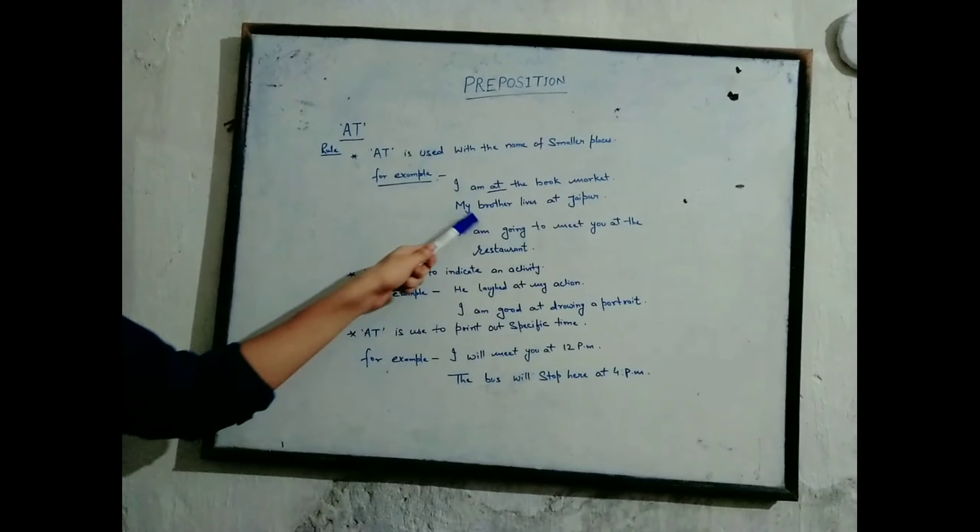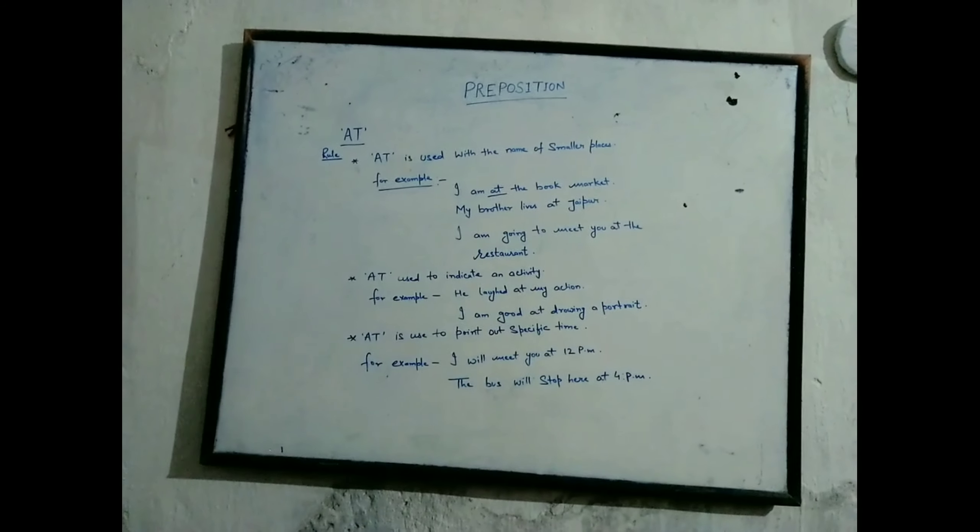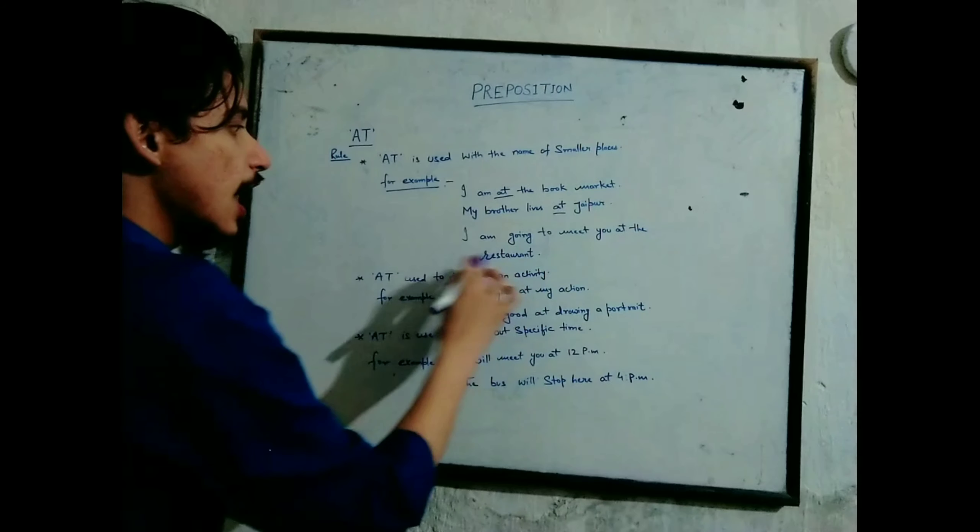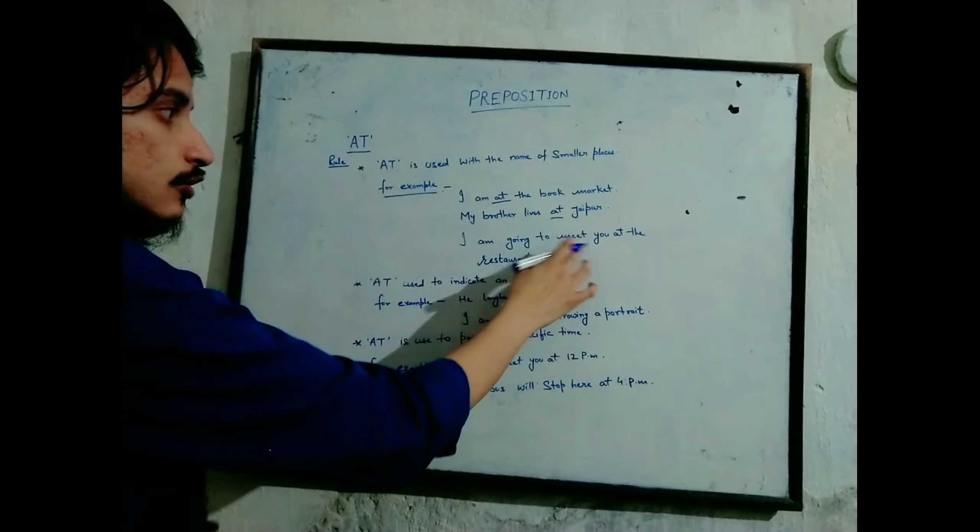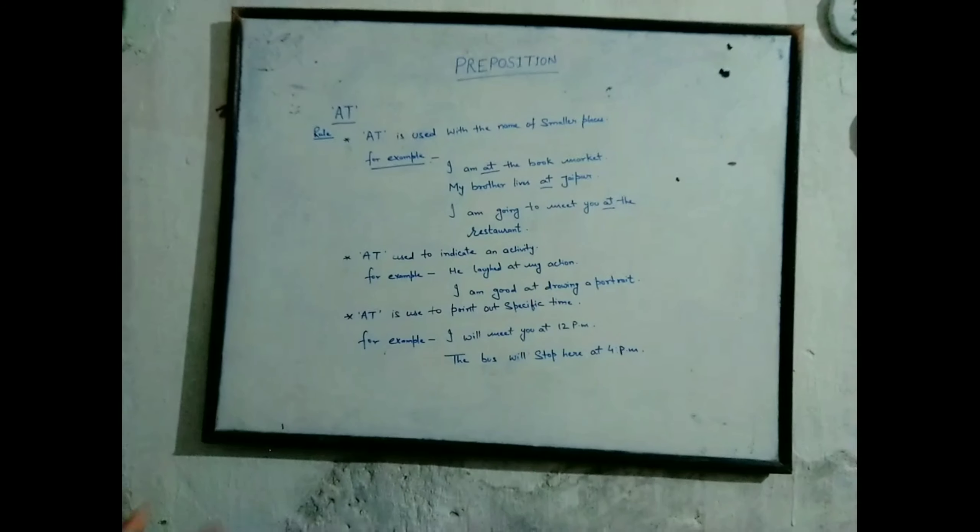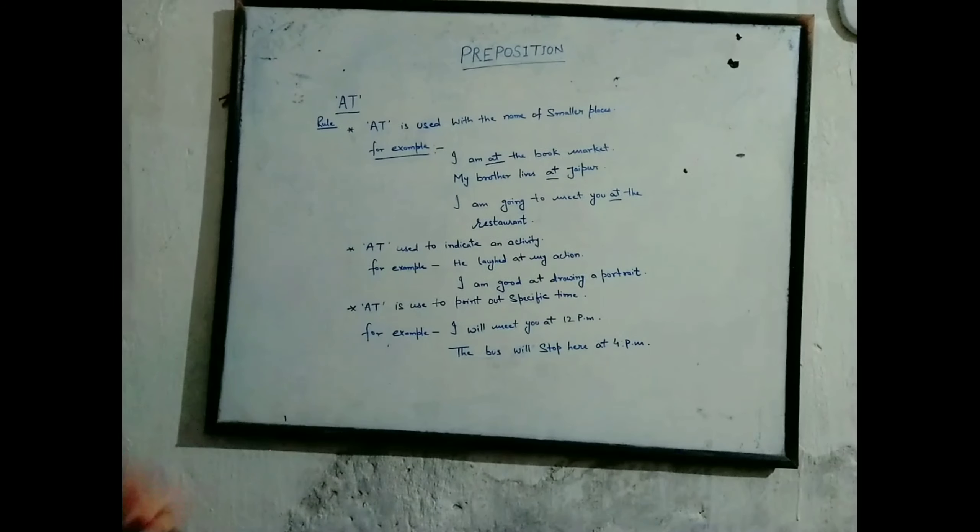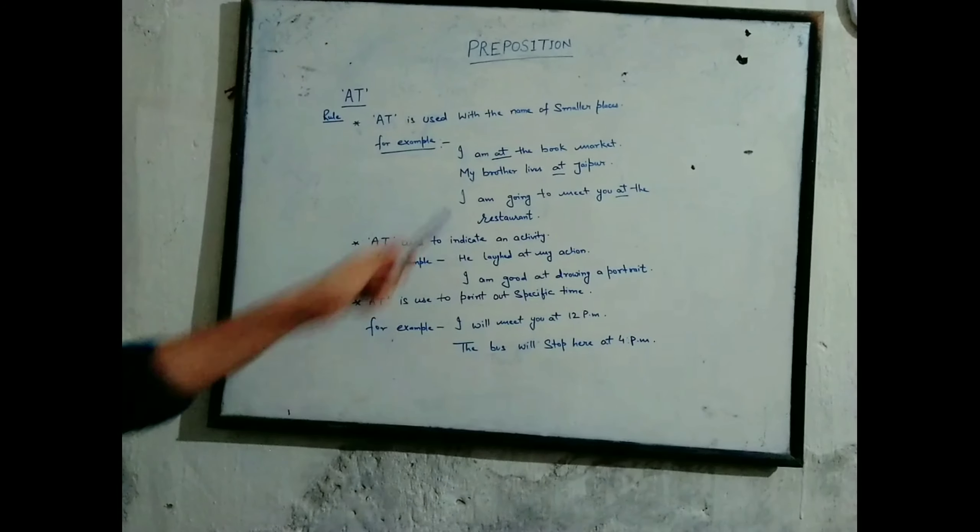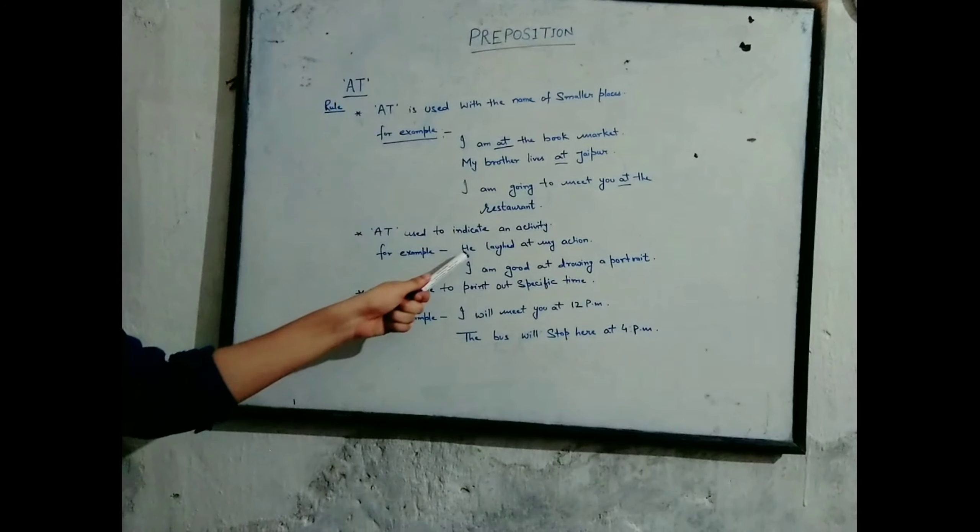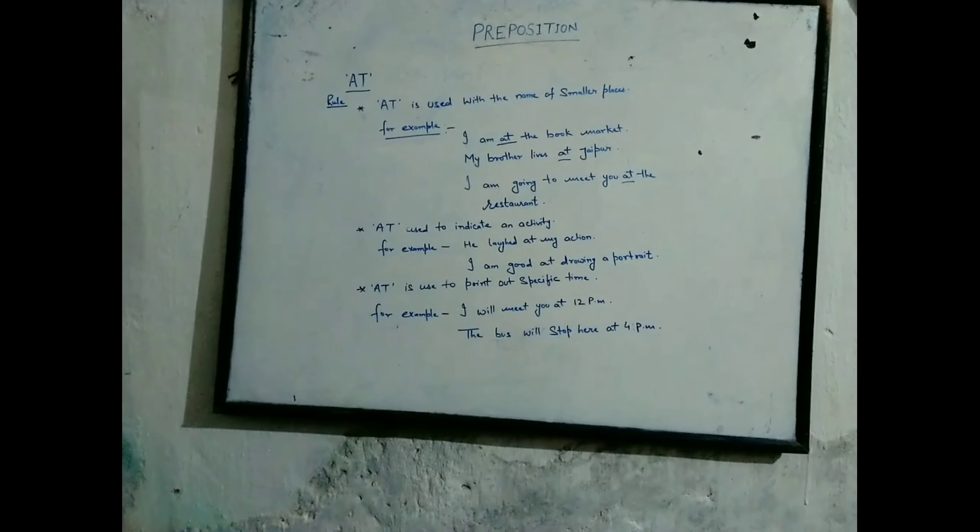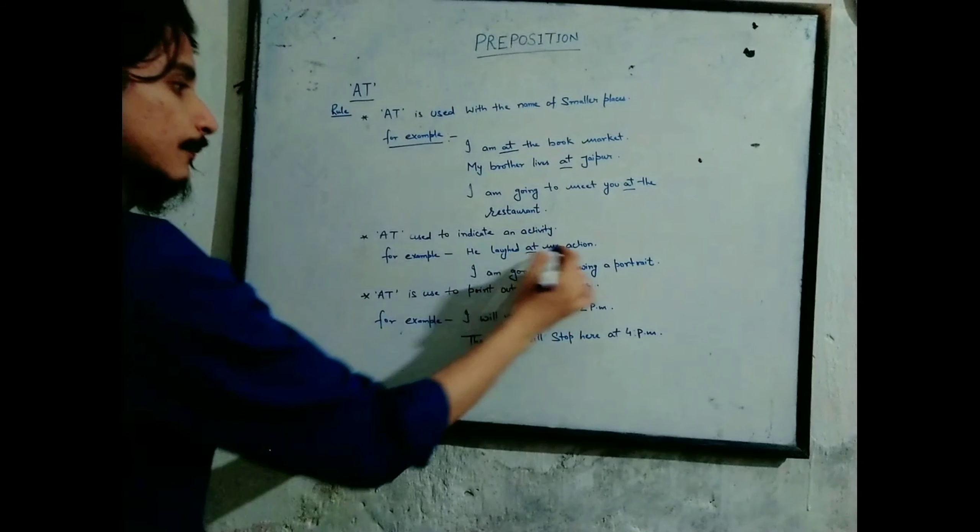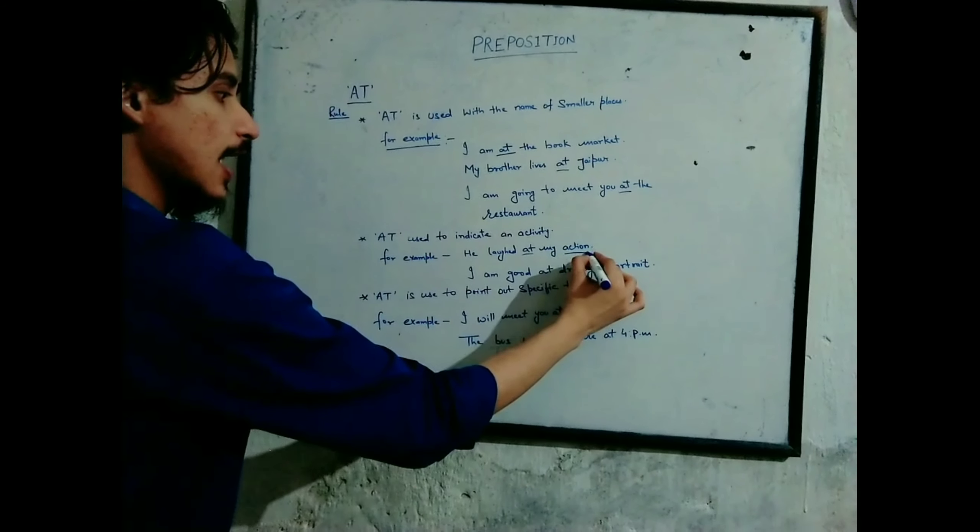The next rule is: 'at' is used to indicate an activity. For example, he laughed at my action. I have some action and that person laughed at me, so 'at' is used to indicate that activity. I am good at drawing a portrait.